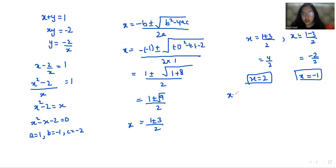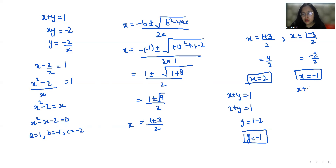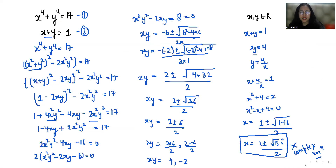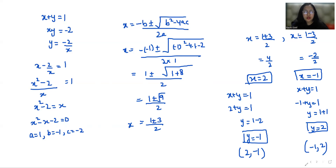From x + y = 1: when x = 2, y = −1; and when x = −1, y = 2. So the real solutions are (x, y) = (2, −1) or (x, y) = (−1, 2). I hope it's clear and you find it useful — please give a thumbs up and subscribe to my channel. Stay tuned!